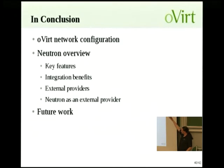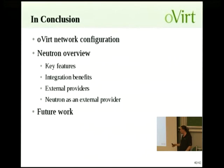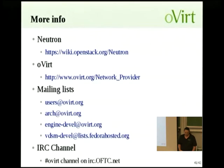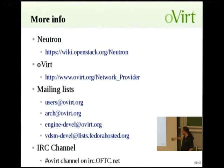In conclusion, we went over oVirt network configuration and how it works, went over Neutron and what we stand to gain from it, what's currently happening, and some planned future work. For more info, check the Neutron wiki, the oVirt integration page which has detailed information about what's currently happening and what's planned next, and you can find us on the mailing list and IRC channel.